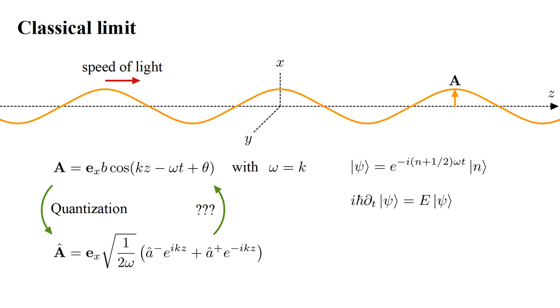This is consistent with the quantum mechanical requirement that the wave function of a stationary state with definite energy E satisfies i ℏ time derivative of the wave function equals E times the wave function. Each of the n photons has energy ℏω, and the zero-point field energy is one-half ℏω.